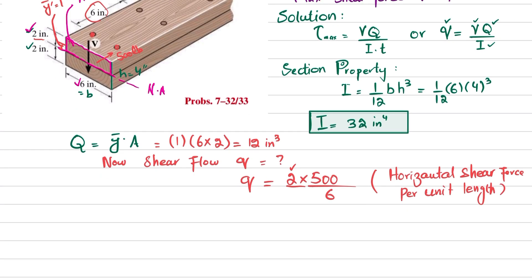Two is for two rows, and 500 divided by 6 is shear force per unit length. When you calculate it, you will get q is 166.67 pounds per inch.